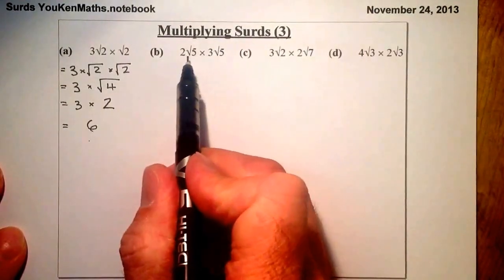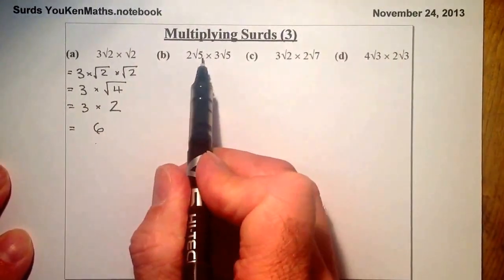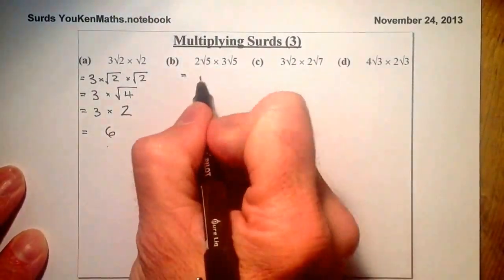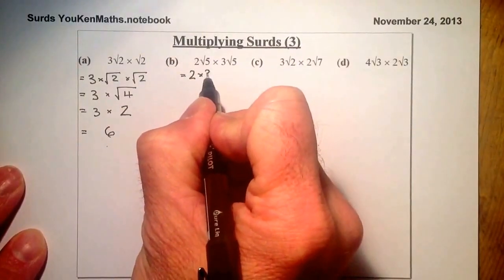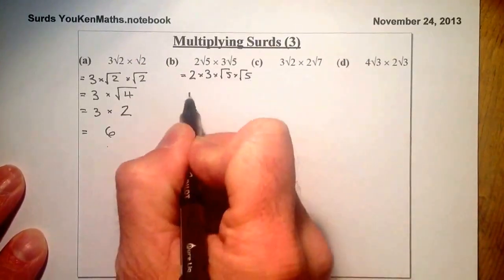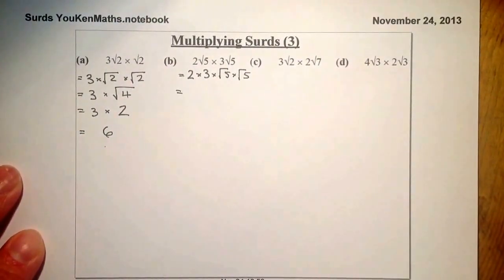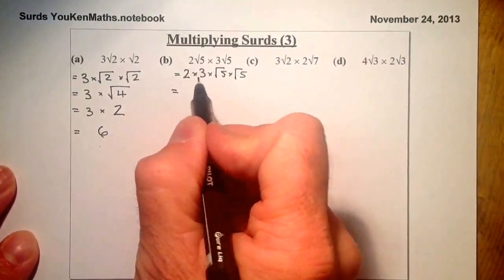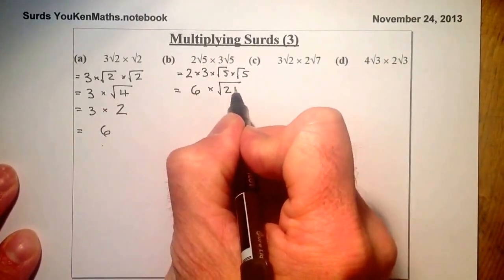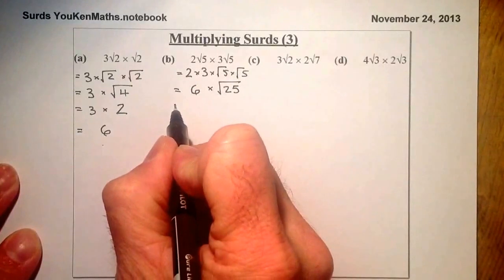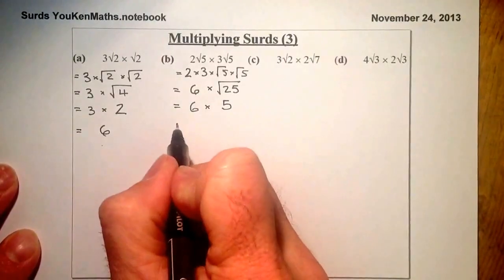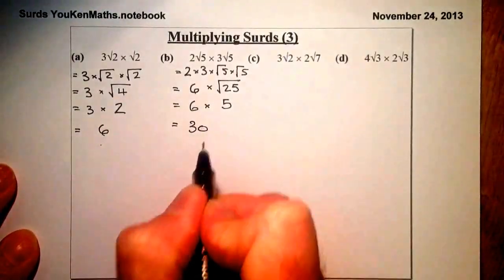Here I've got two numbers in front of the roots: a number here and a number here, with two roots. Let's multiply these through. I'll rearrange it to be 2 times 3 times root 5 times root 5. I'll multiply the two whole numbers together first — that gives me 6 — and root 5 times root 5 gives me root 25. Or if I skip that step, root 5 times root 5 equals 5. So the final answer is 30.